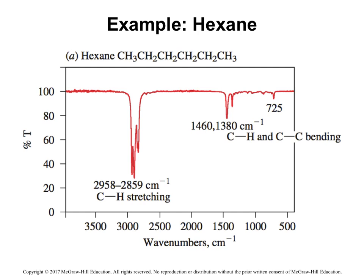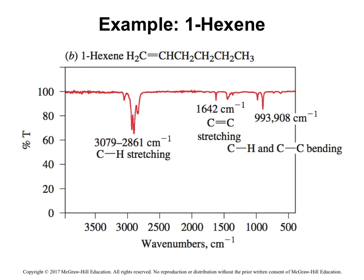Let's look at some examples. This is hexane. We can see this portion, which would be the fingerprint portion, and then we see the traditional C-H stretching. Don't memorize these numbers, but I want you to be able to tell that this one does not have an alcohol in it, because we don't see that round, broad signal at this end. If you compared hexane to hexanol, you'd see a very big difference.